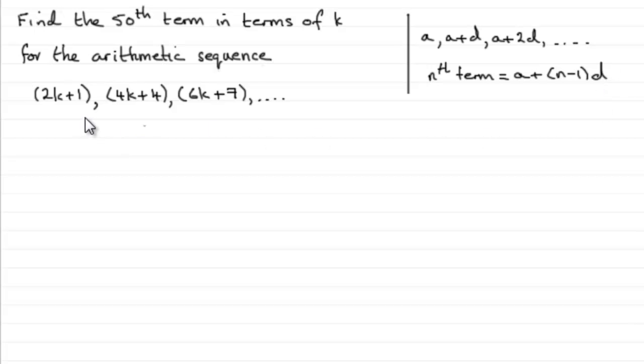Well the common difference is easy because all we've got to do is subtract two consecutive terms. It doesn't matter whether we do this value minus this or this one minus this one here. Both of them will come to d. So we need to get d first of all, so I'm going to say that d equals, and I'm going to take the second term 4k plus 4 and I'm going to subtract the first term 2k plus 1.